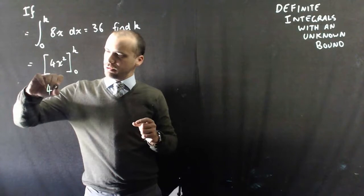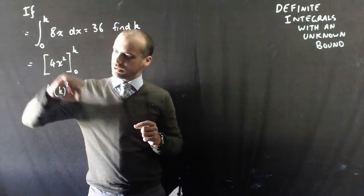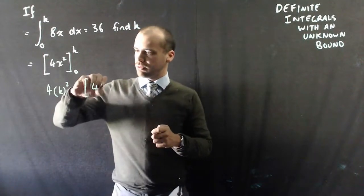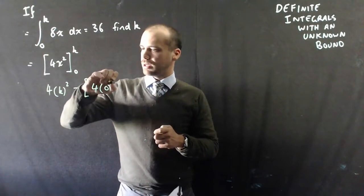So it's 4k squared. And now I'm subtracting, and I always do this a bit careful, 4 times 0 squared.